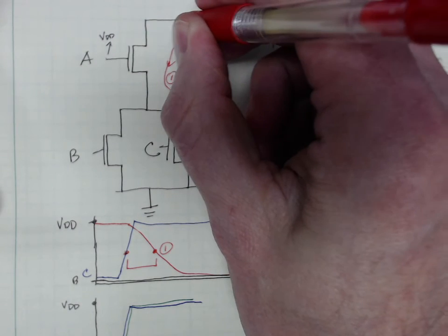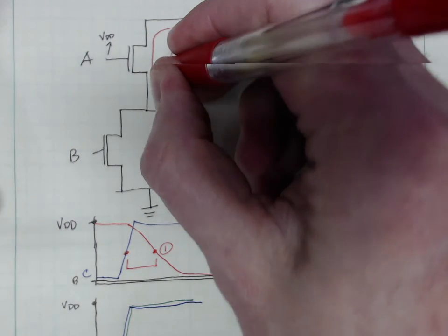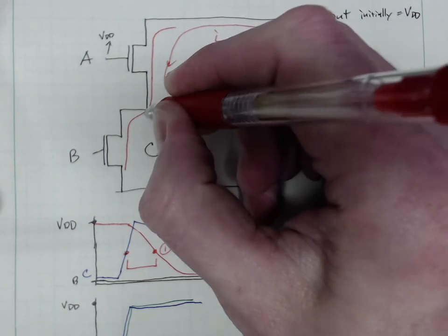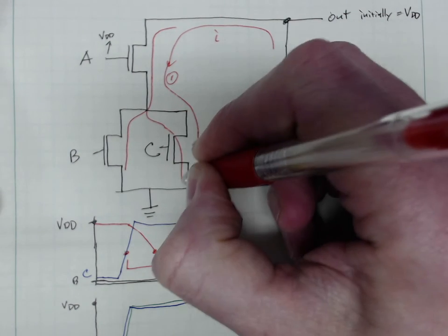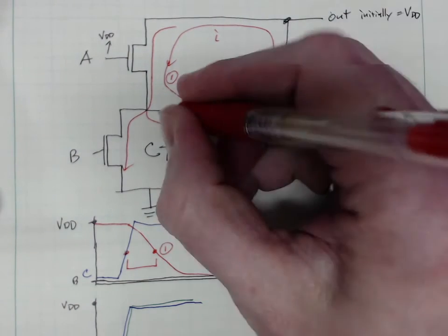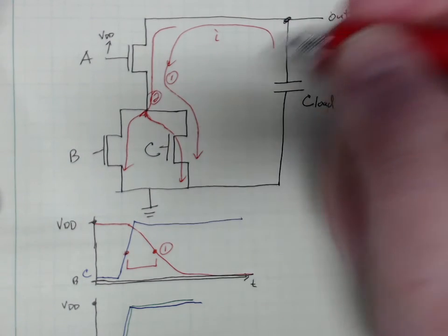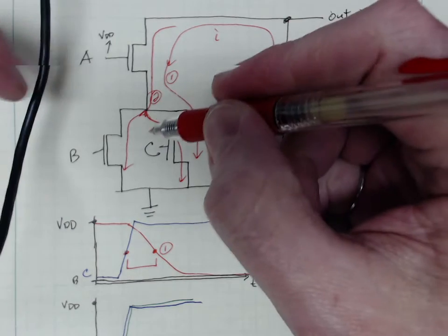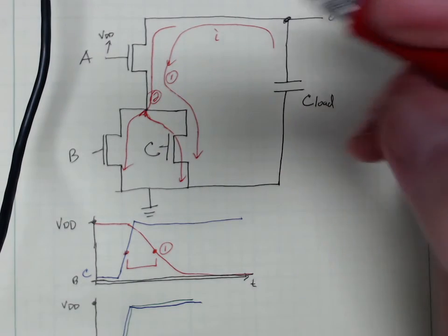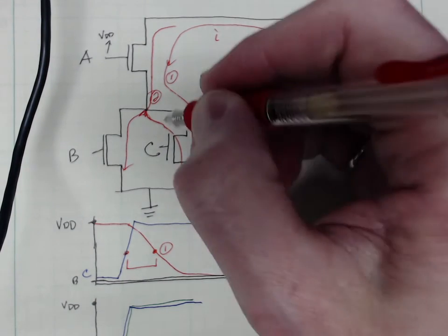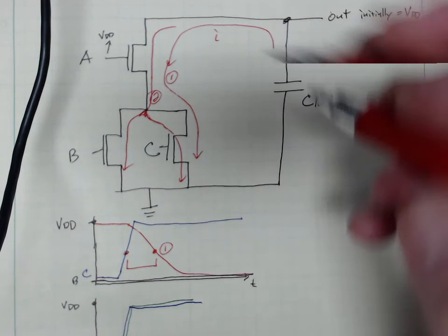If B and C go high at the same time, this switch and this switch they both turn on. So now our current goes through A—it always goes through A—and it goes through B and C at the same time in parallel. If these are equal sized, we're gonna get a little extra; the current will split here in some way.